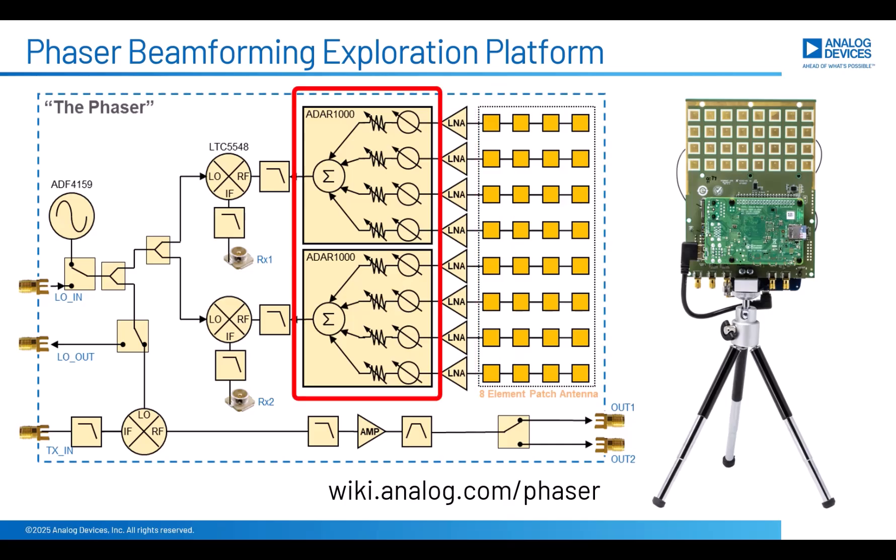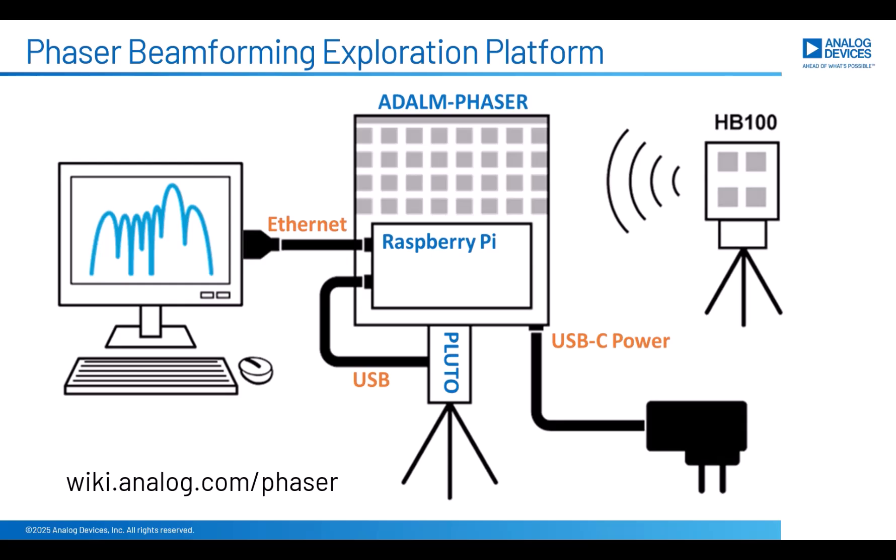It's an 8-element receive array that goes to two beam-forming ICs, the ADAR-1000s, and then to two mixers, which mix our 10 gigahertz frequency down to something in the range of Pluto. And here's the diagram of how that is all connected.